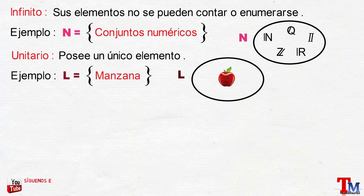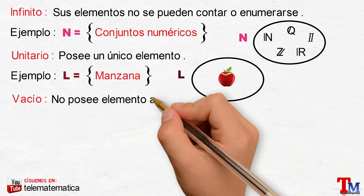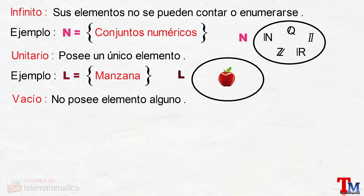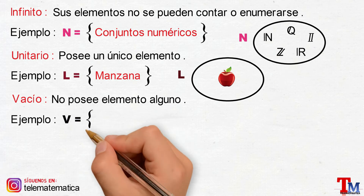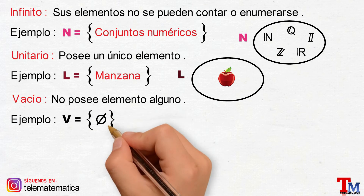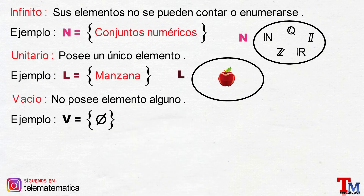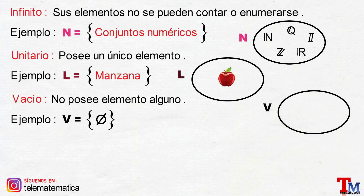Siguiente clasificación, conjunto vacío, que se define como: no posee elemento alguno. Por ejemplo, el conjunto V, cuyo símbolo que representa el vacío. Gráficamente sería el conjunto V, que no contiene ningún elemento.